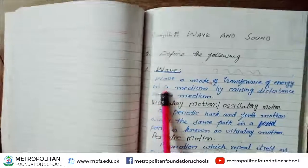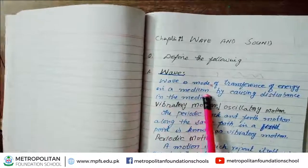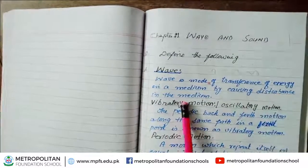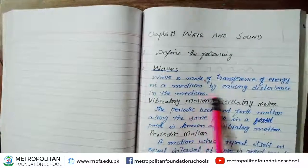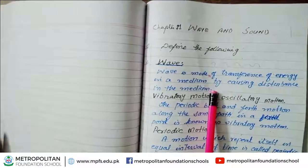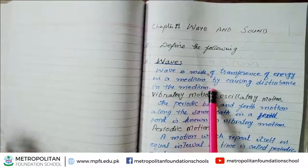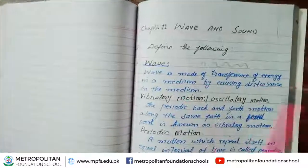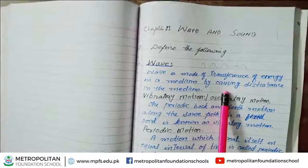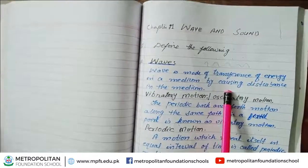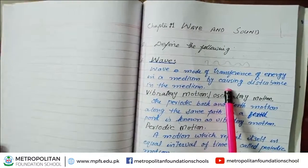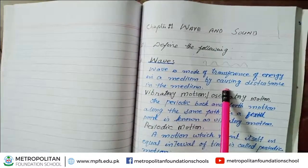What is a wave? A wave is a mode of transference of energy in a medium by causing disturbance in the medium. When there is no disturbance of energy in the medium, you will not have sound.